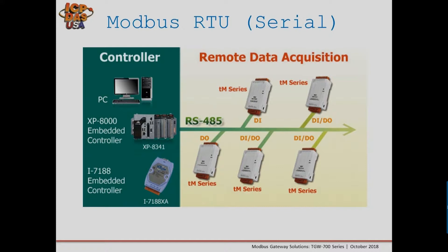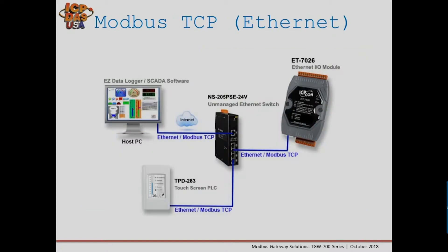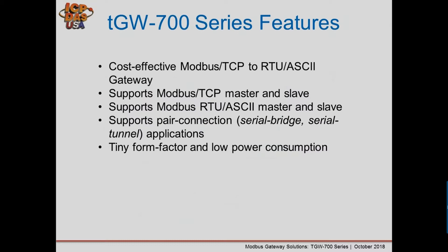A typical Modbus RTU application has a controller, PLC, or Modbus master device connected via RS-485 to several slave devices daisy-chained along a single bus. Modbus TCP on the other hand has a master device connected through Ethernet to an Ethernet switch, with Modbus TCP slave devices also connected through the Ethernet network.